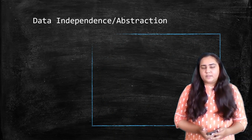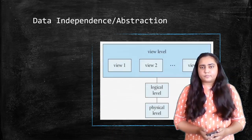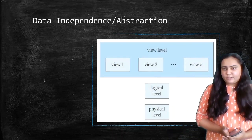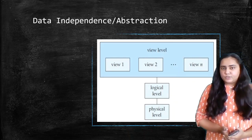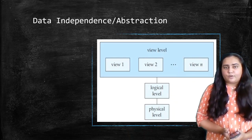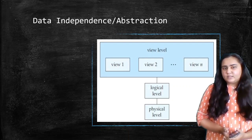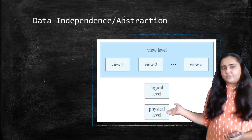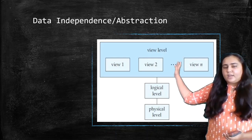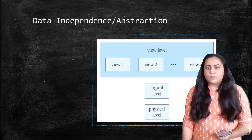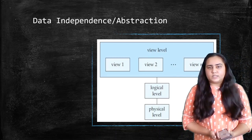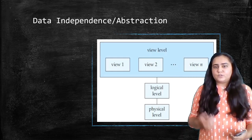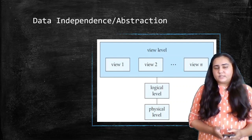Now let's talk about data independence or abstraction. The diagram you see here is known as the three-level architecture of DBMS. There are three levels: the bottom-most is the physical level, then there is the logical level, and the top-most is the view level. We are going to see one by one what these levels mean.